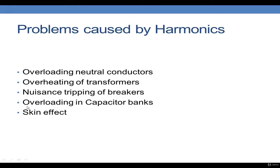One problem caused by harmonics is overloading of neutral conductors. For a balanced three-phase supply, the neutral current is essentially zero. However, in buildings with a large number of computers, PCs, and other power electronic loads, the third harmonic current gets added in the neutral conductor. As a result, the neutral conductor must be very large to accommodate these harmonic currents, otherwise it can lead to overloading and fires if the neutral conductors are not rated appropriately.